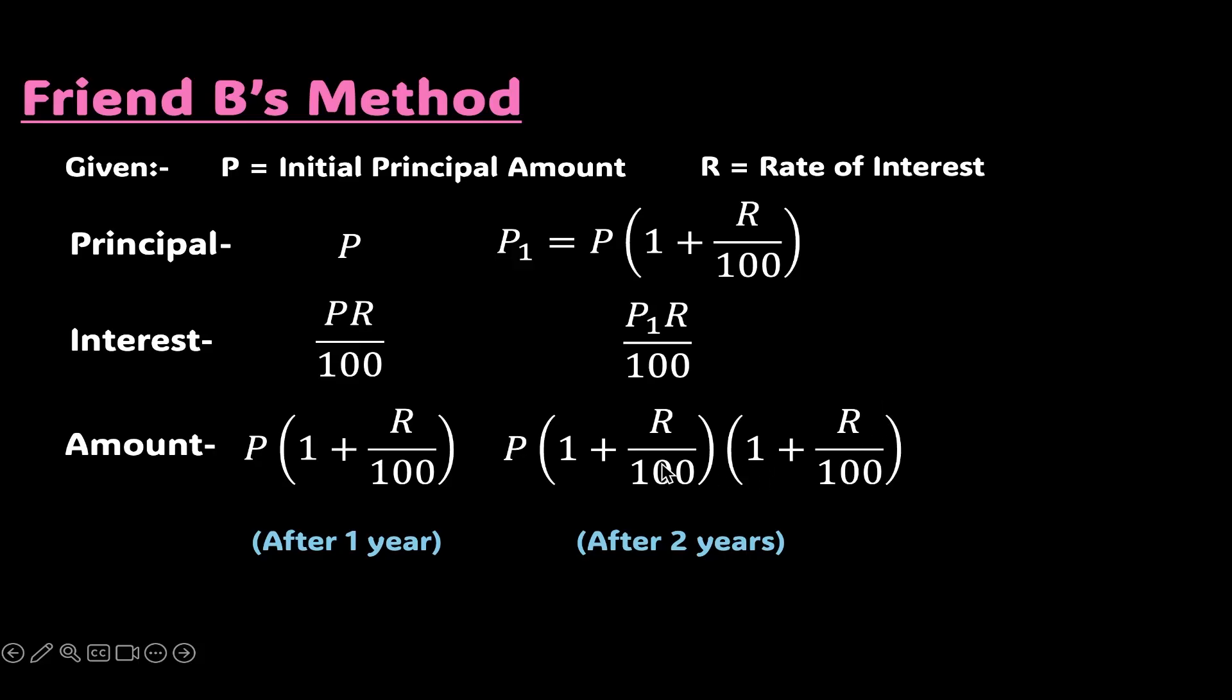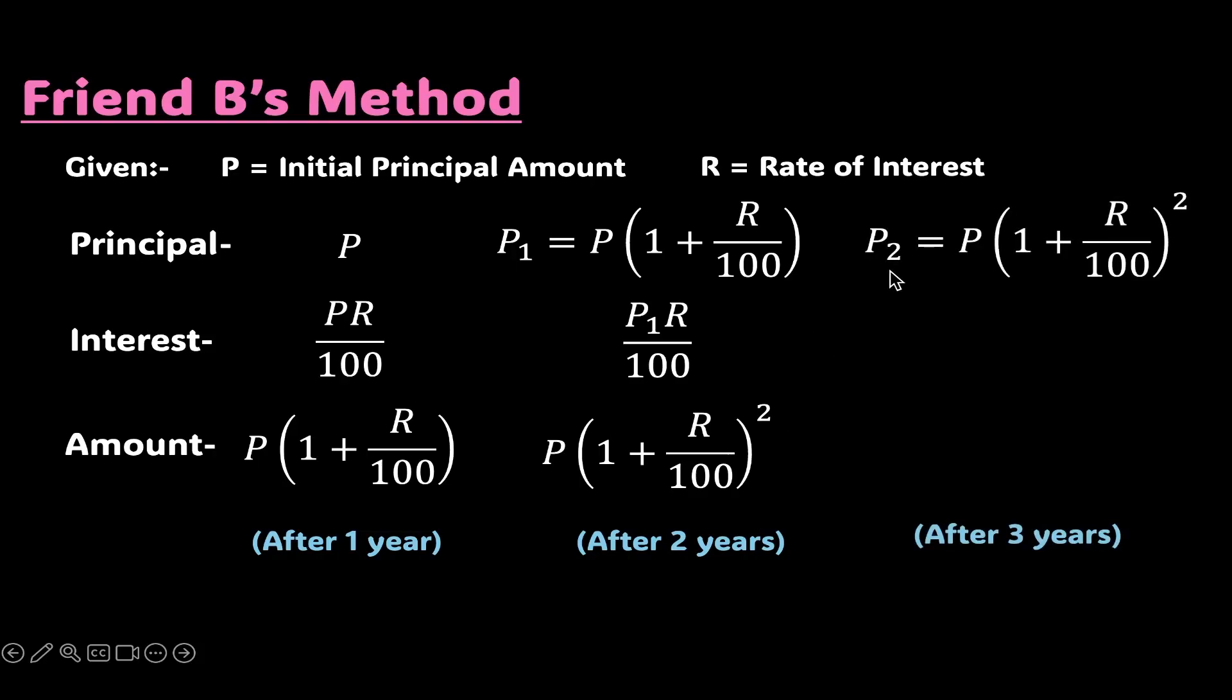Remember, this is the same thing multiplied twice. Therefore, the amount after two years will be P times 1 plus R over 100 whole squared. Now this will be the principal amount. Let's call it P2 for the third year and the process continues so on.